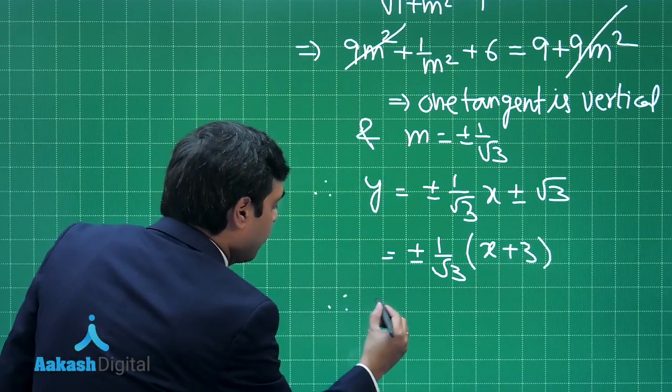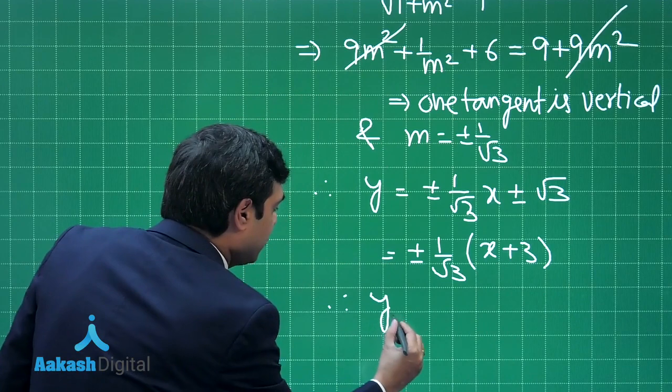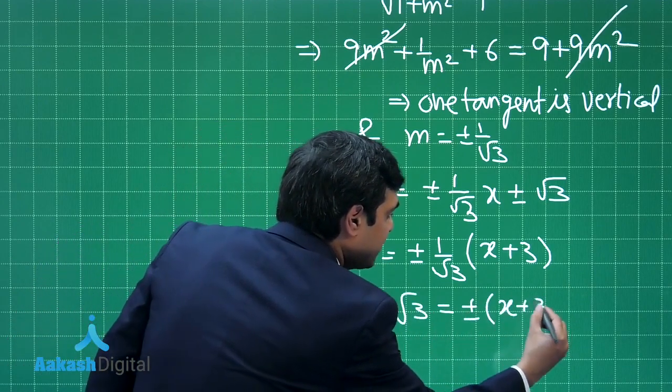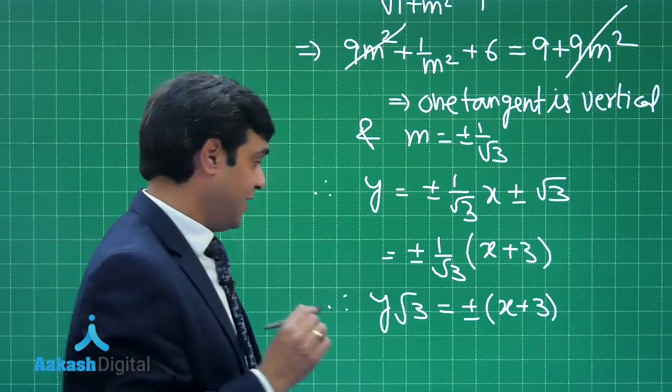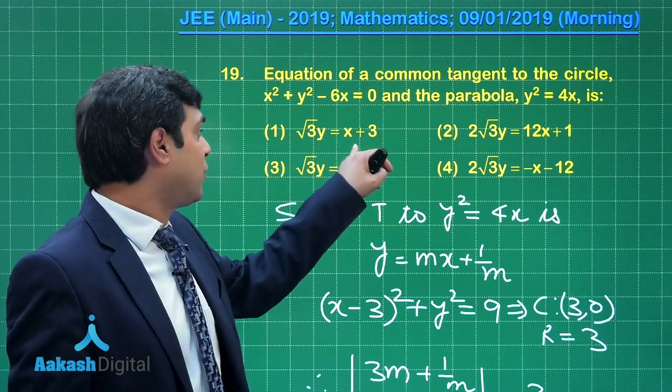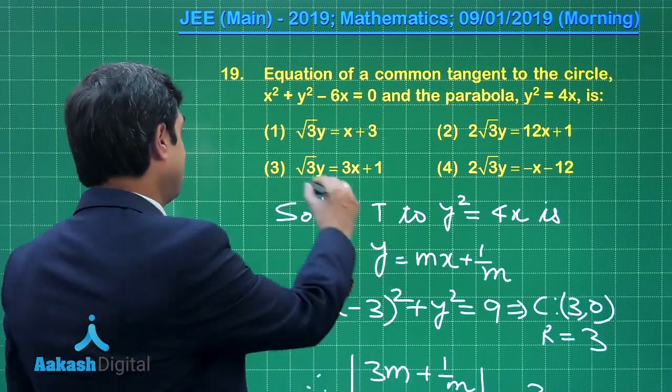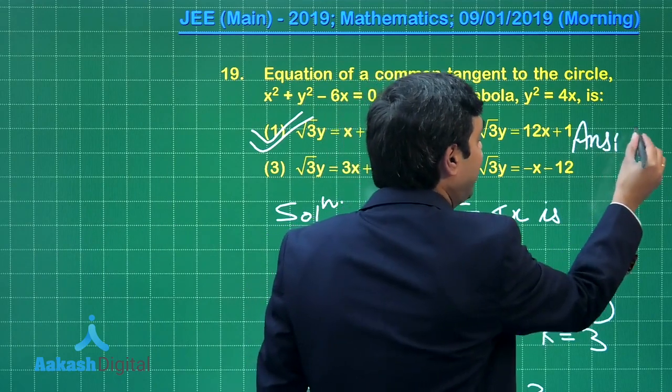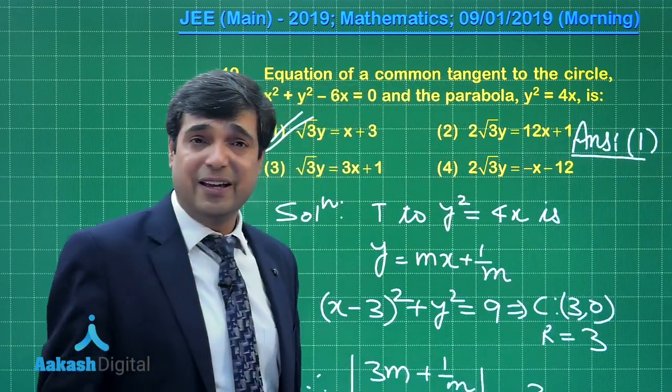So finally, we have y × √3 = ±(x + 3) as the two other tangents. Let us check out from the given options. √3y = x + 3 is mentioned as one of the tangents. So correct answer for the given question is option number 1. I am sure this is clear.